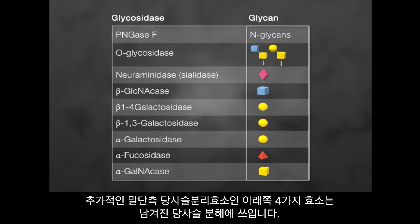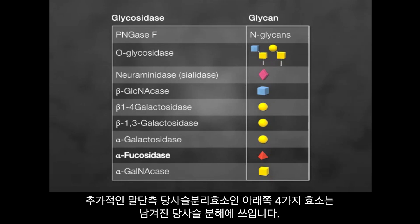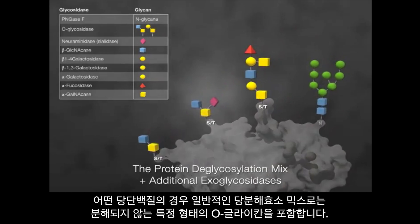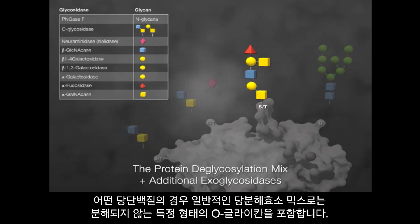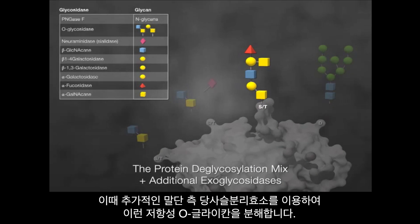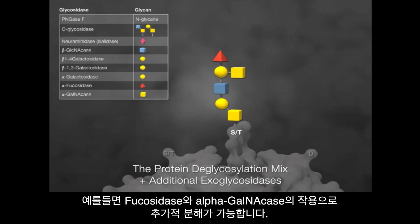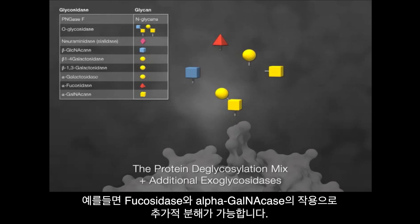Additional exoglycosidases — for instance, beta-1,3-galactosidase, alpha-galactosidase, and fucosidase — can be used along with the protein deglycosylation mix. Some glycoproteins have O-glycans that are resistant to the protein deglycosylation mix; however, additional glycosidases can be used along with the mix to facilitate the removal of the glycan. In this example, fucosidase and alpha-galactosidase are used and the resistant glycan is removed.